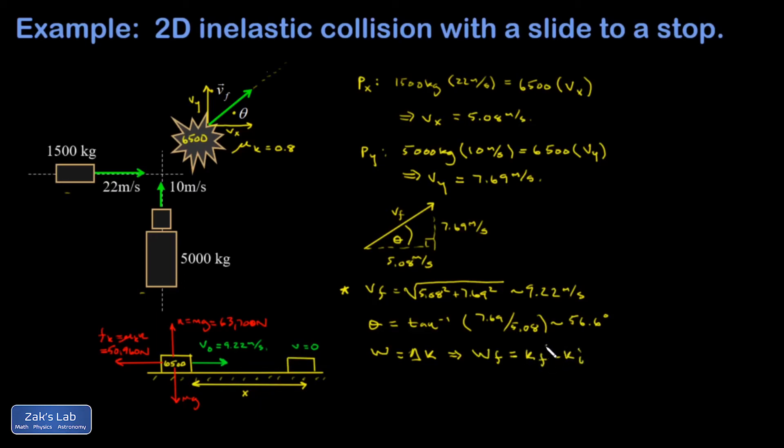If I'm sliding to a stop, then k final must be zero. And writing the work done by friction in terms of a force times displacement, I'm going to get a minus sign because it points opposite to the displacement vector. So I have negative fk times x equals negative of the initial kinetic energy, and I can go ahead and solve for x.